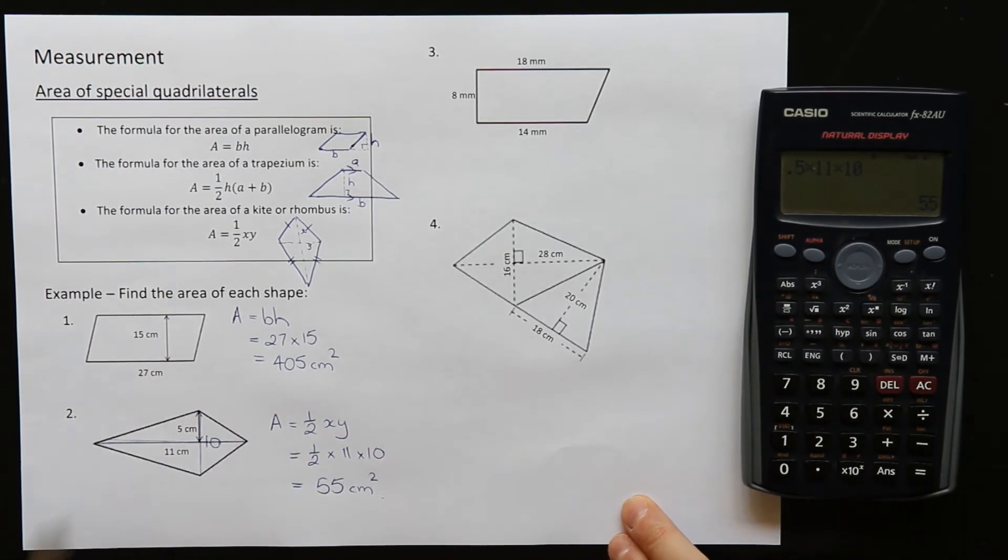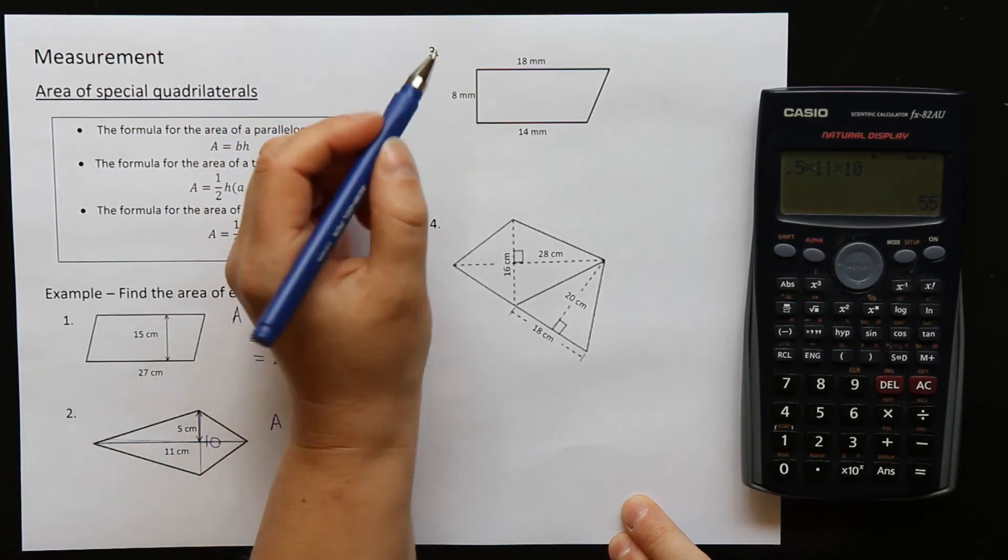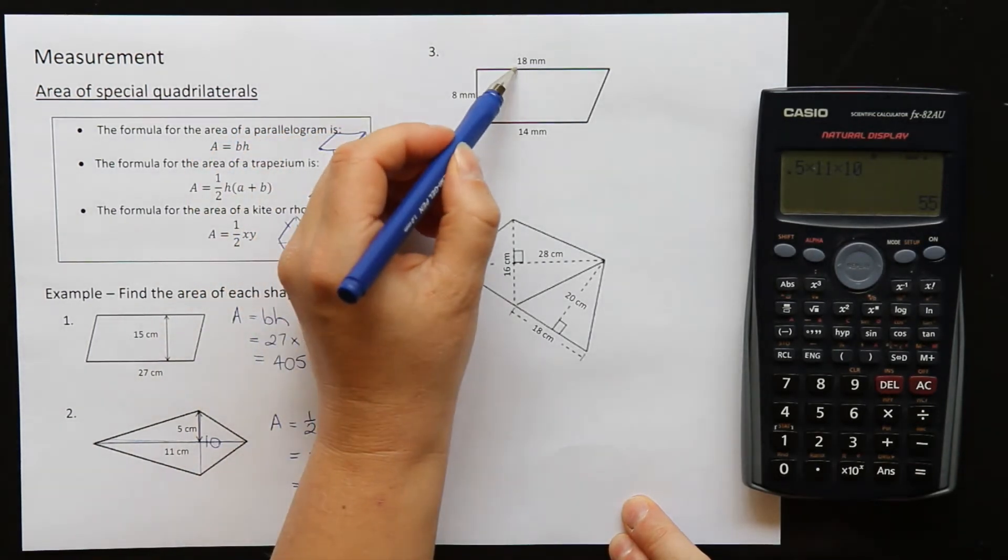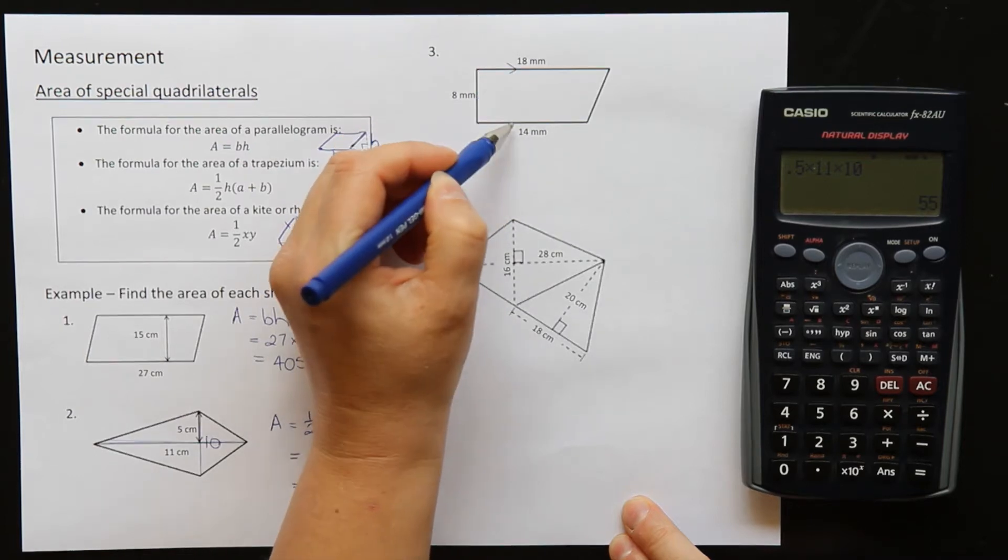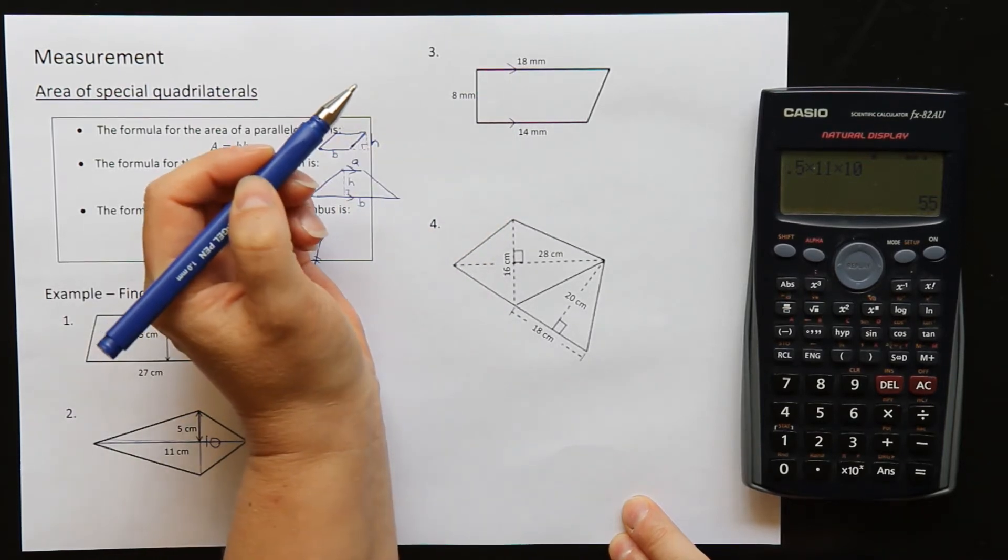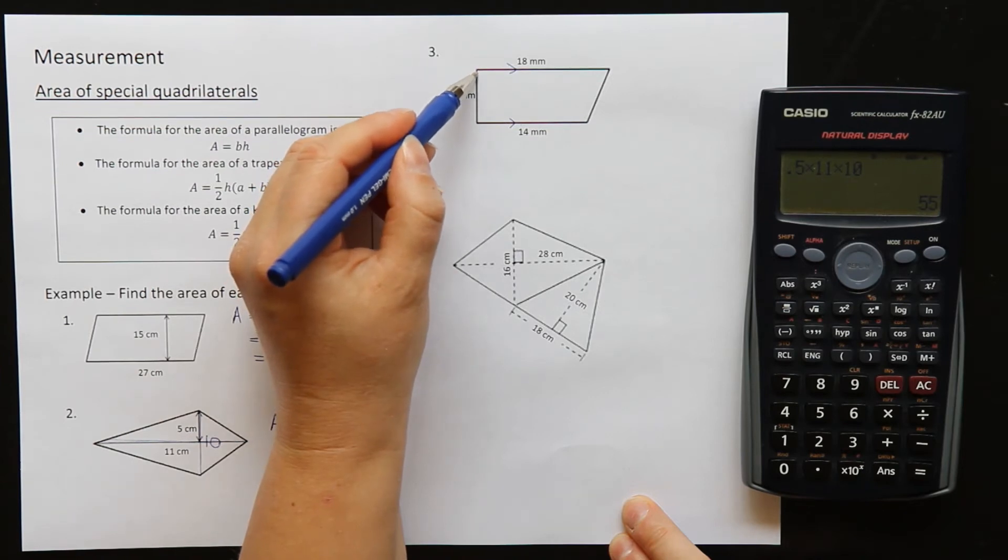On to question three. This is a trapezium. So these ones here are my two parallel sides, although you're probably used to seeing the little arrows on there to show that. And this one here is my height.